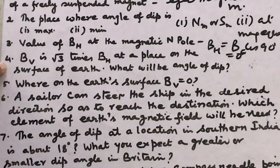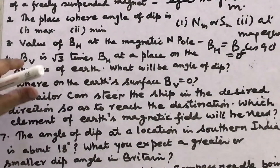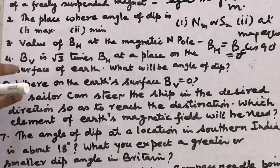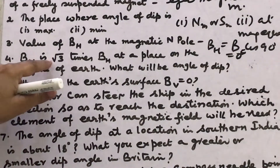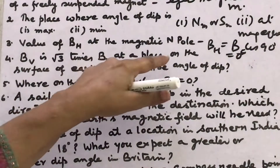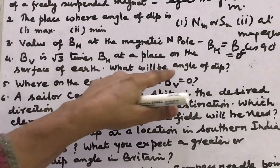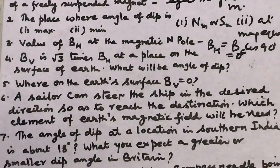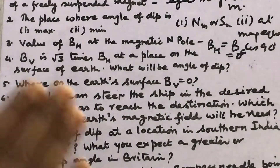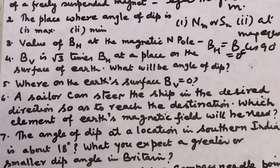Fourth question: the vertical component of Earth's magnetic field BV is root 3 times BH at a place on the surface of the earth. What will be the angle of dip? We need to find the relation between BV and BH with the angle of dip.